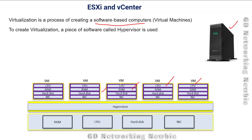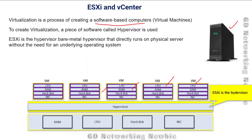To create virtual machines we need a piece of software known as a hypervisor. There are multiple hypervisors by different vendors, and ESXi is the hypervisor by VMware - a virtualization software used to create multiple virtual machines. ESXi is also known as a bare metal or Type 1 hypervisor, which runs directly on the physical server without the need for any underlying operating system.